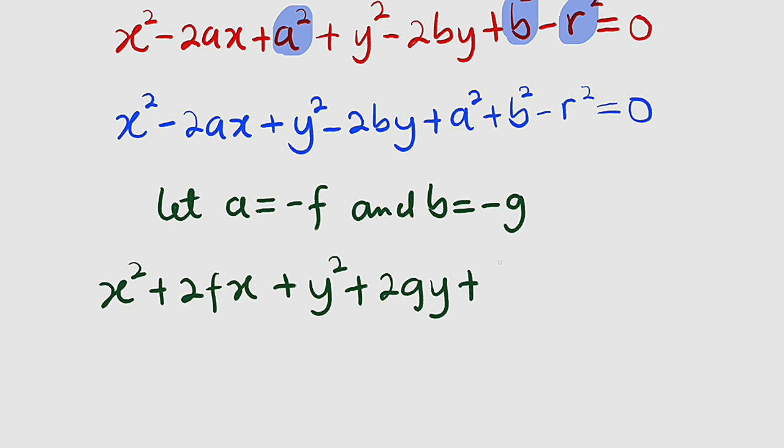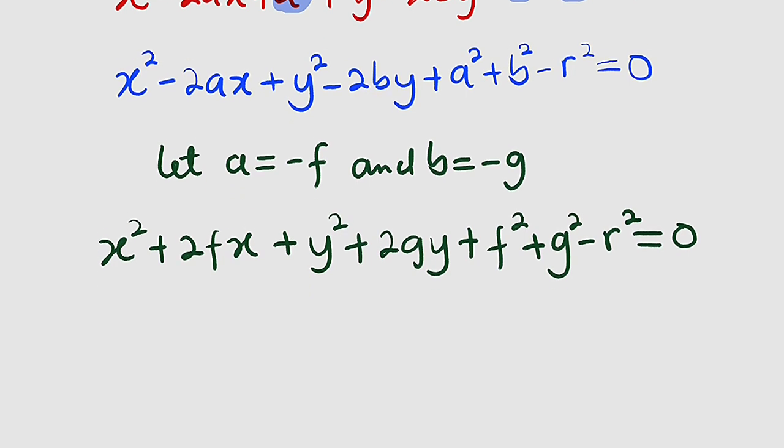If you square that you're going to get f squared because negative squared is positive. Then plus g squared because b is negative g. If you square that you're going to get positive g squared. Then we have minus r squared, the whole of this equal to zero.